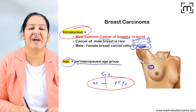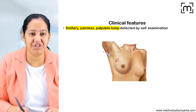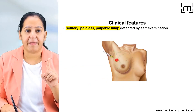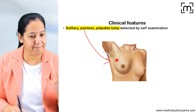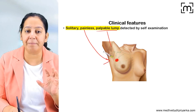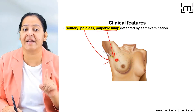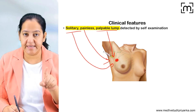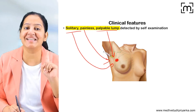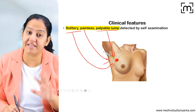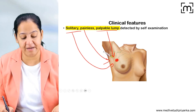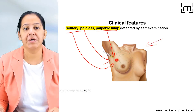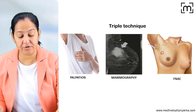Now coming to the clinical features: breast cancer is painless — it's completely painless, there is no pain. It presents as a palpable lump inside the female breast, and it's usually solitary — single, solitary, painless, palpable lump inside the breast — which is detected by the female herself while palpating the breast. That is the clinical feature.